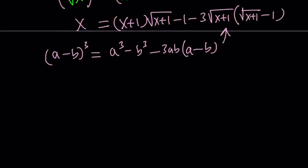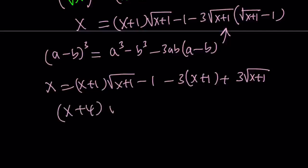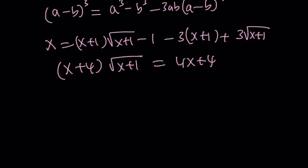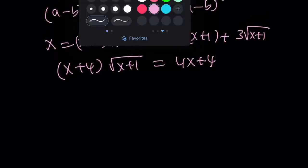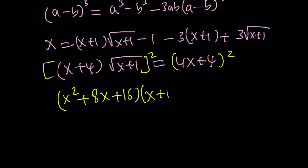Then you expand it and get: x equals (x plus 1) times square root of x plus 1 minus 1 minus 3 times (x plus 1) plus 3 times square root of x plus 1. If you kind of put the radicals on one side, which is nice, we're going to square both sides because we want to get rid of all the radicals. That gives us (x plus 4) squared, which is x squared plus 8x plus 16, multiplied by (x plus 1), and on the right-hand side, 16x squared plus 32x plus 16.